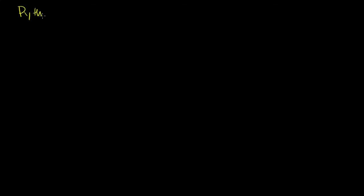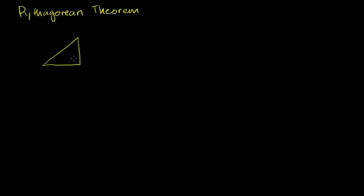Let's now talk about what is easily one of the most famous theorems in all of mathematics — the Pythagorean Theorem. It deals with right triangles. A right triangle is a triangle that has a 90 degree angle in it. So the way it is drawn here, this is our 90 degree angle.